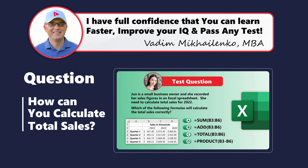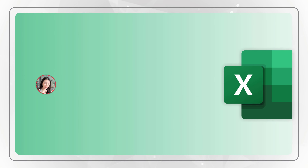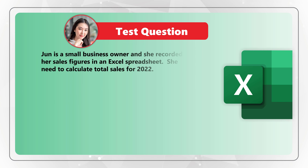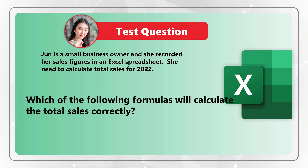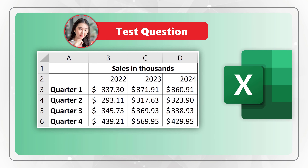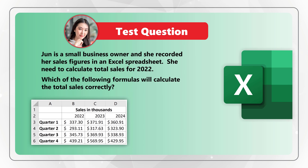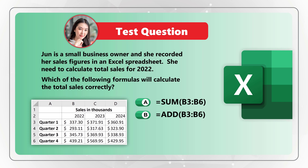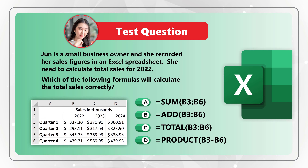Here's an interesting question to test your knowledge of Excel formulas and functions. June is a small business owner who recorded her sales figures in an Excel spreadsheet. She needs to calculate total sales for 2022. Which of the following formulas will calculate the total sales correctly? You are presented with a snapshot of data from Microsoft Excel and need to select one of four choices: Choice A – =SUM(B3:B6), Choice B – =ADD(B3:B6), Choice C – =TOTAL(B3:B6), and Choice D – =PRODUCT(B3-B6).